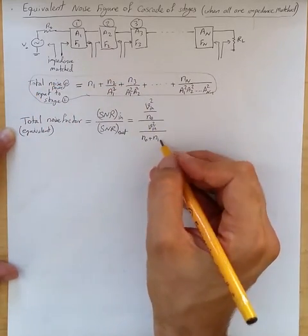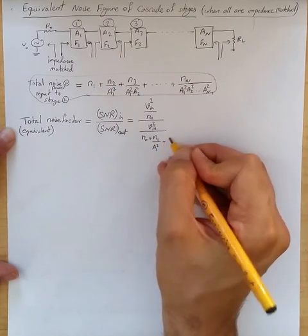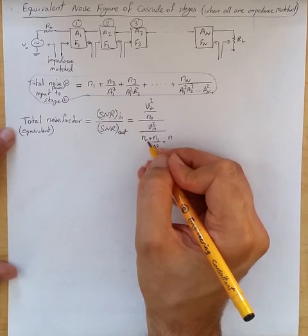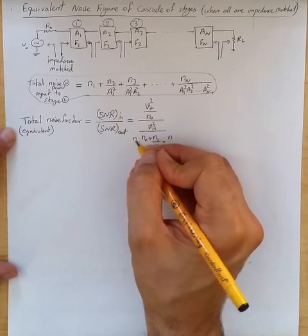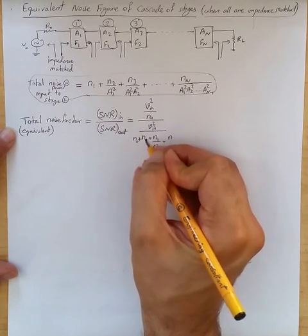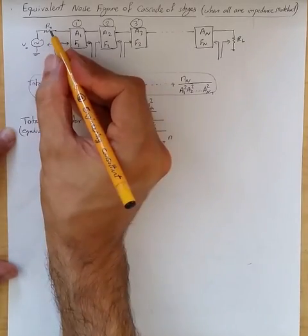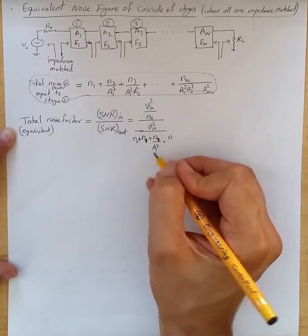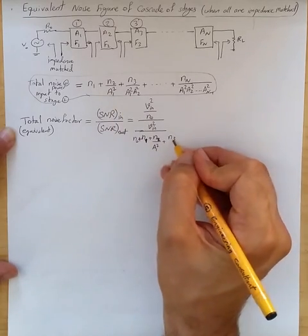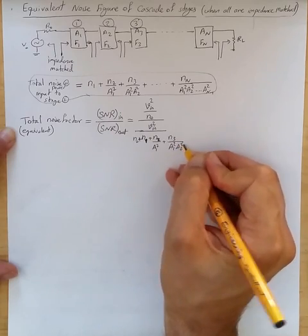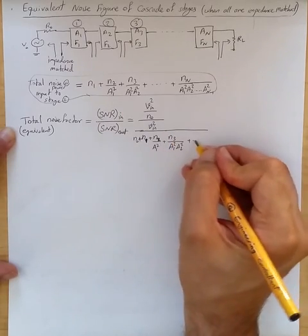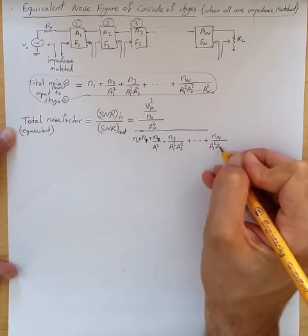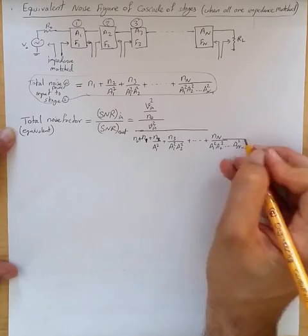This is n0 plus n1, n0, existing noise at input, and then n1 plus n2 divided by a1 squared coming from here, n3 divided by a1 squared, a2 squared, plus n sub n, a1 squared, a2 squared, a n minus 1 squared.